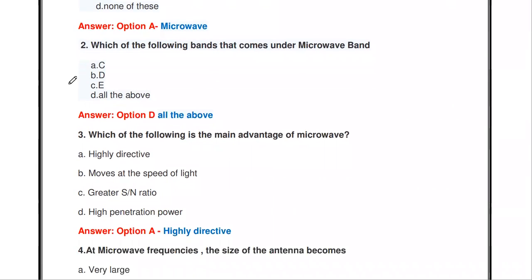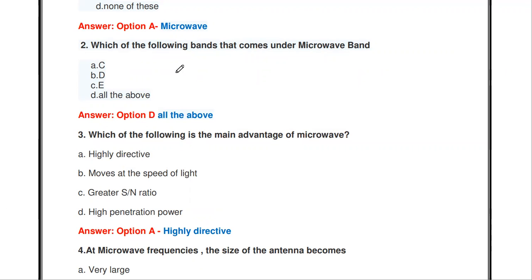The next question: which of the following bands come under the microwave band? In the electromagnetic spectrum there are many bands available. The options are C band, D band, E band, or all of the above. All of the above is the correct answer — C, D, and E bands all come under the microwave frequency.